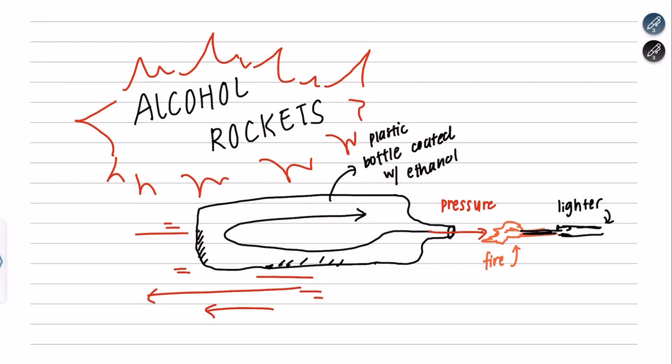An alcohol rocket is the result of a chemical reaction between the mixture of air and alcohol. In this case, we are using ethanol and heat. This reaction occurs very quickly due to the heating of the exhaust gases causing high pressures in the bottle and making it fly.